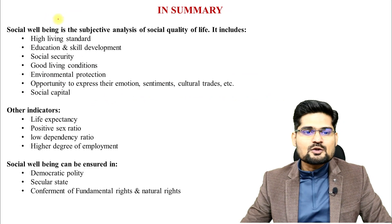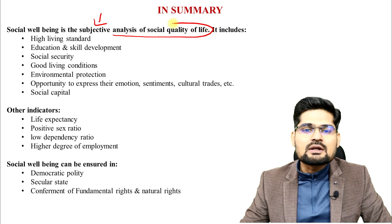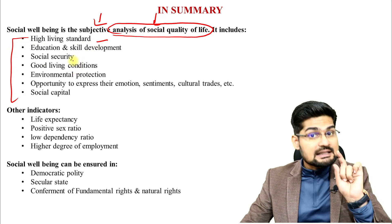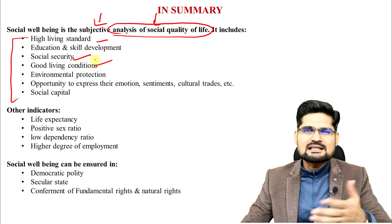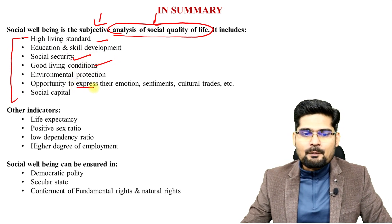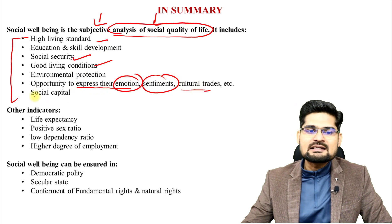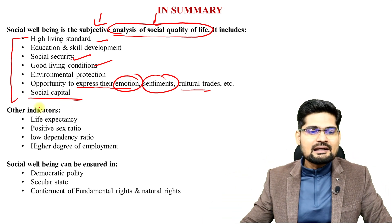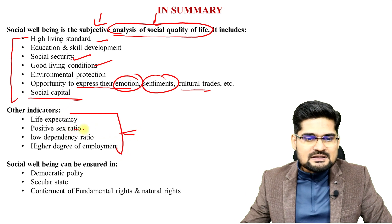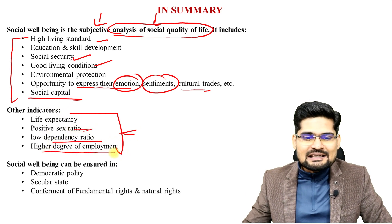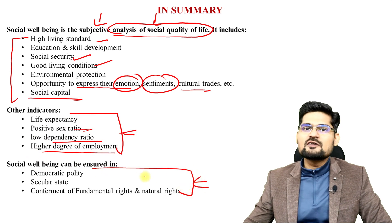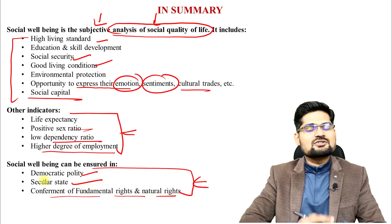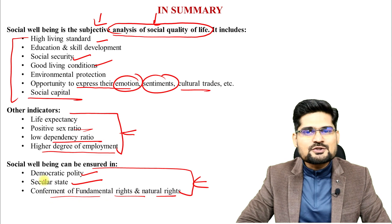In summary, social well-being is a subjective analysis of quality of life that includes high standard of living, education and skill development, social security, decent living conditions, environmental protection, opportunity to express emotions, cultural traits, and social capital. Other indicators include life expectancy, positive sex ratio, low dependency ratio, and high degree of employment — alongside ensuring social well-being through democratic polity, a secular state, and conformance of fundamental and natural rights.